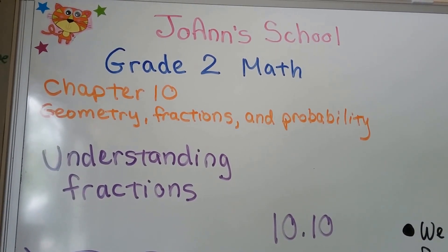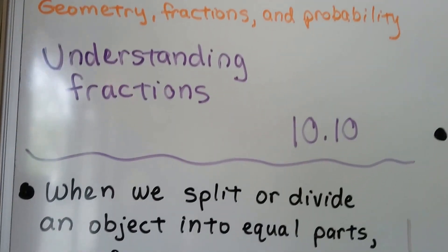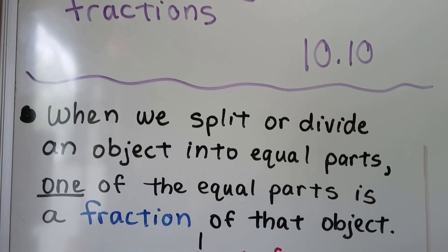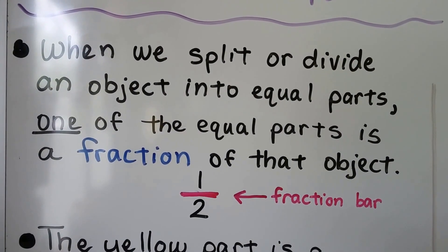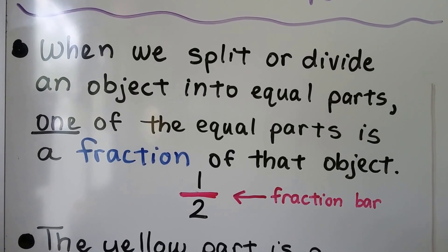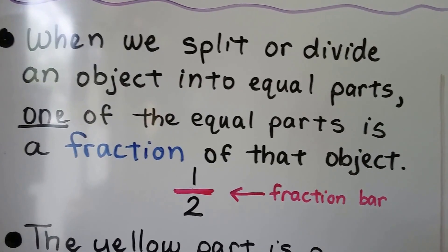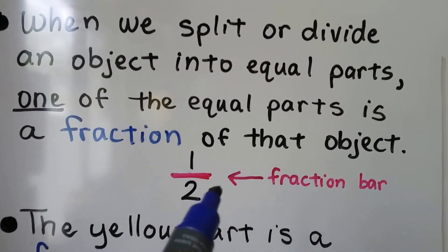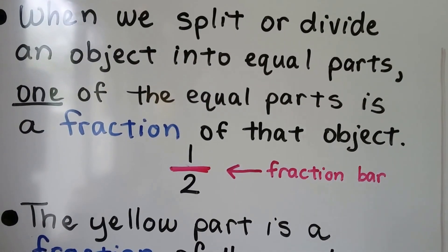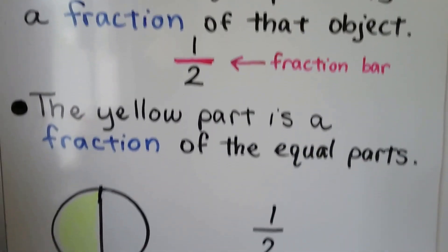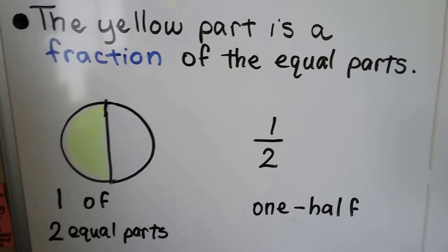This is Understanding Fractions, lesson 10.10. When we split or divide an object into equal parts, one of the equal parts is a fraction of that object. We have a fraction bar, and that separates the top part from the bottom part. Take a look at this circle — the yellow part is a fraction of the equal parts.